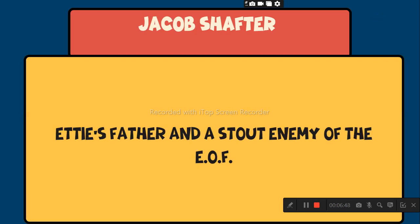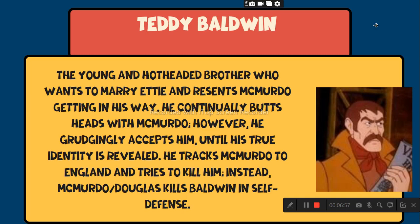Jacob Shafter is Etty's father and a stout enemy of the Ancient Order of Free Men. Teddy Baldwin is the young and hot-headed brother who wants to marry Etty and sees McMurdo as getting in his way. He continually butts heads with McMurdo; however, he grudgingly accepts him until his true identity is revealed. He tracks McMurdo to England and tries to kill him. Instead, McMurdo — Douglas — kills Baldwin in self-defense.